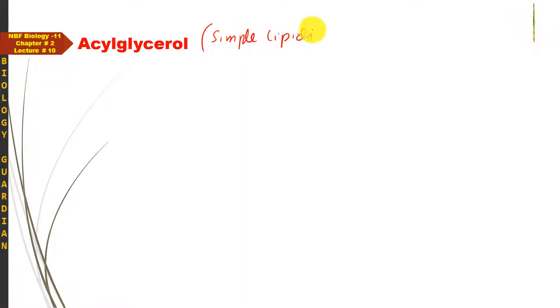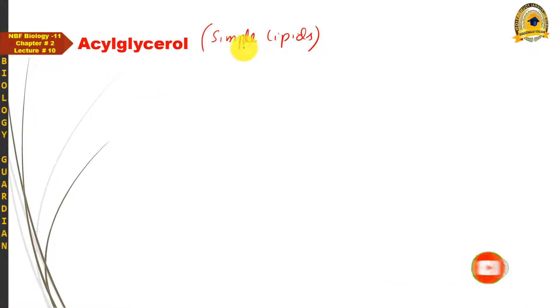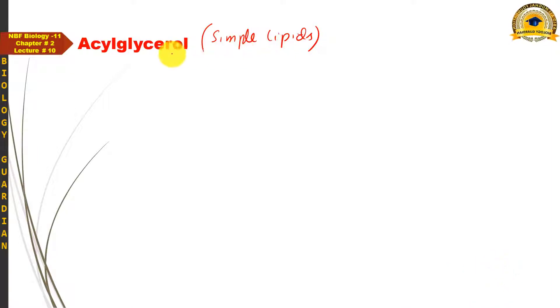Acylglycerols basically simple lipids ہیں۔ Simple lipids ایسے lipids کو کہا جاتا ہے جو alcohol اور fatty acid کے بنے ہوئے ہوتے ہیں۔ تو acylglycerols بھی چونکہ simple lipids ہیں، they are also made up of alcohol and fatty acid.